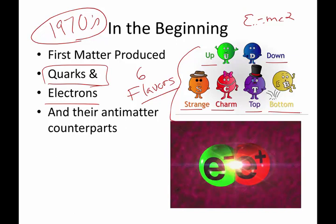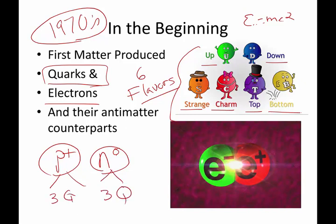Quarks are the things that make up protons and neutrons. Each proton and neutron is not a fundamental particle. Each one of these is made out of three quarks in different combinations. And when these quarks combine in different ways, they make other particles.